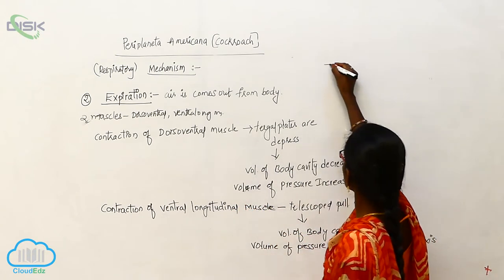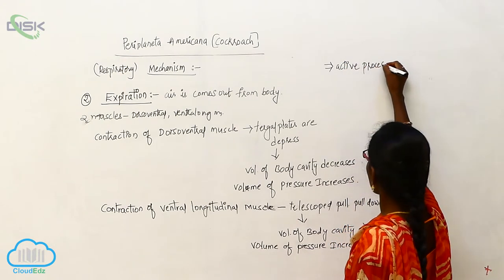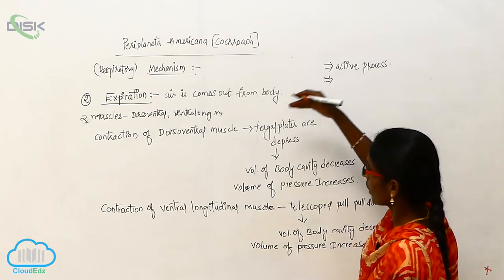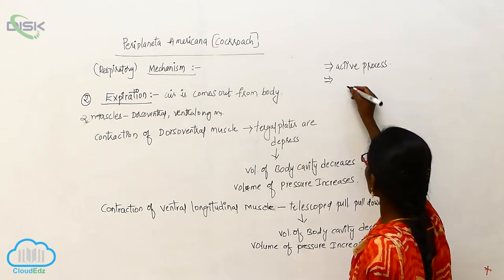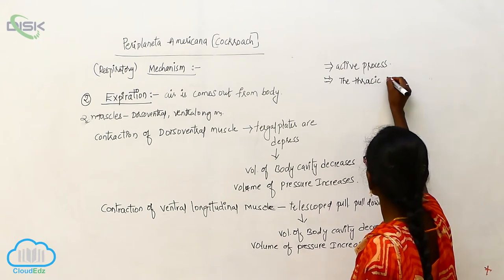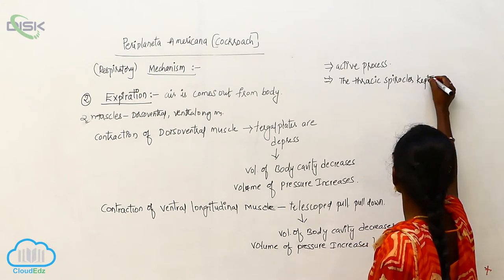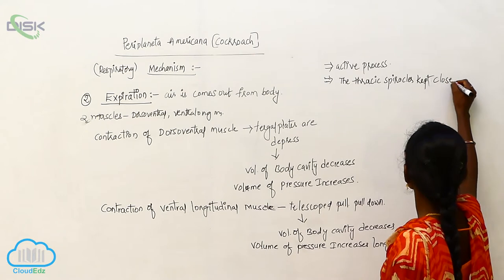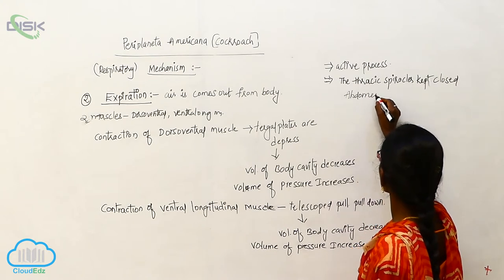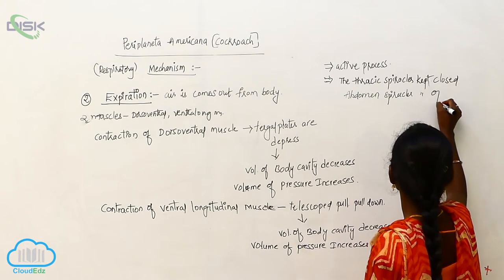So expiration is an active process. In the expiration process, the thoracic spiracles are kept closed and the abdomen spiracles are kept open.